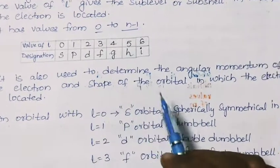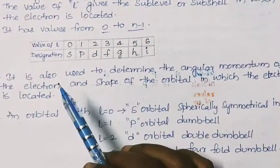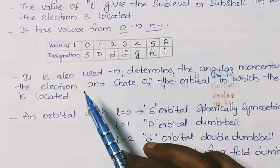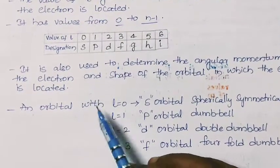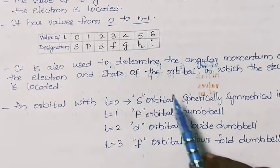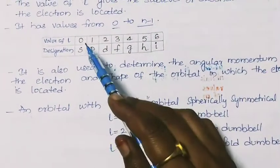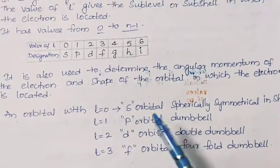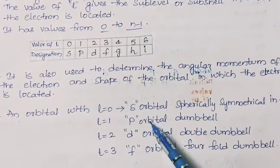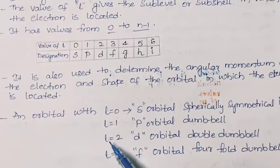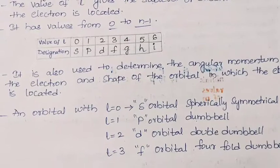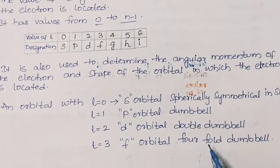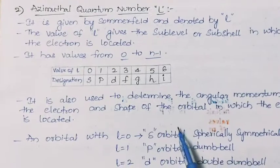The azimuthal quantum number is also used to determine the angular momentum of the electron and the shape of the orbital. An orbital with l = 0 is an s orbital — it is spherically symmetrical in shape. When l = 1, it is a p orbital and it is dumbbell-shaped. When l = 2, it is a d orbital and it has a double dumbbell shape. When l = 3, it is an f orbital with a four-fold dumbbell shape. This is all about the azimuthal quantum number.